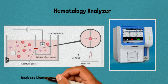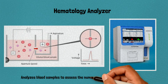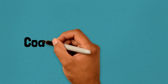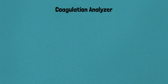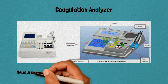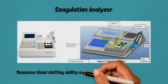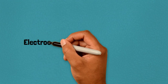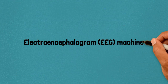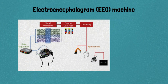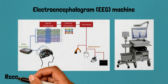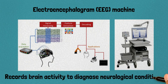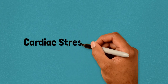21. Hematology analyzer: analyzes blood samples to assess the number and characteristics of blood cells. 22. Coagulation analyzer: measures blood clotting ability and monitors anticoagulant therapy. 23. Electroencephalogram machine: records brain activity to diagnose neurological conditions.